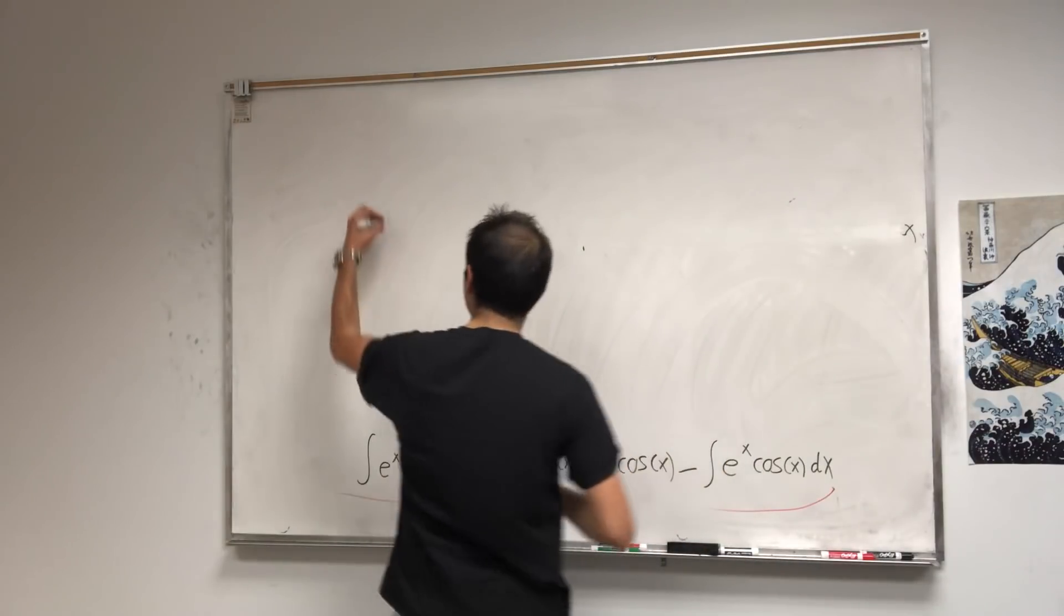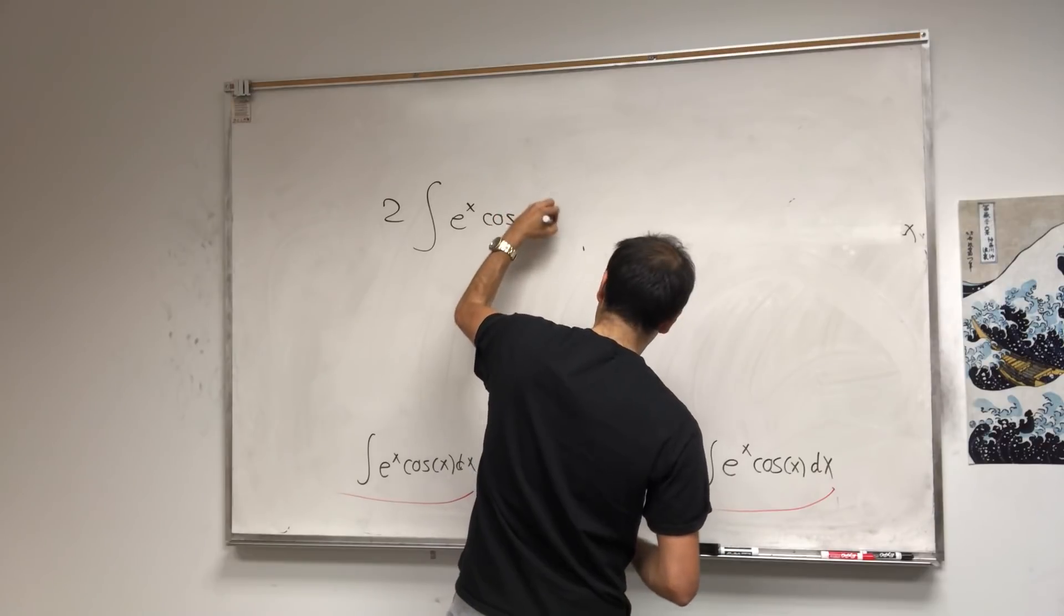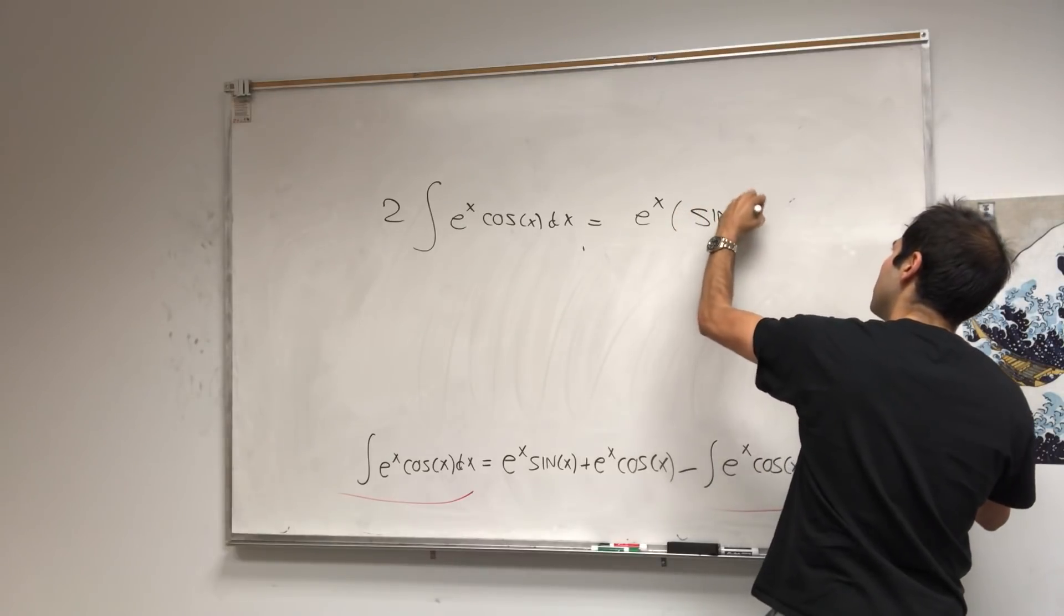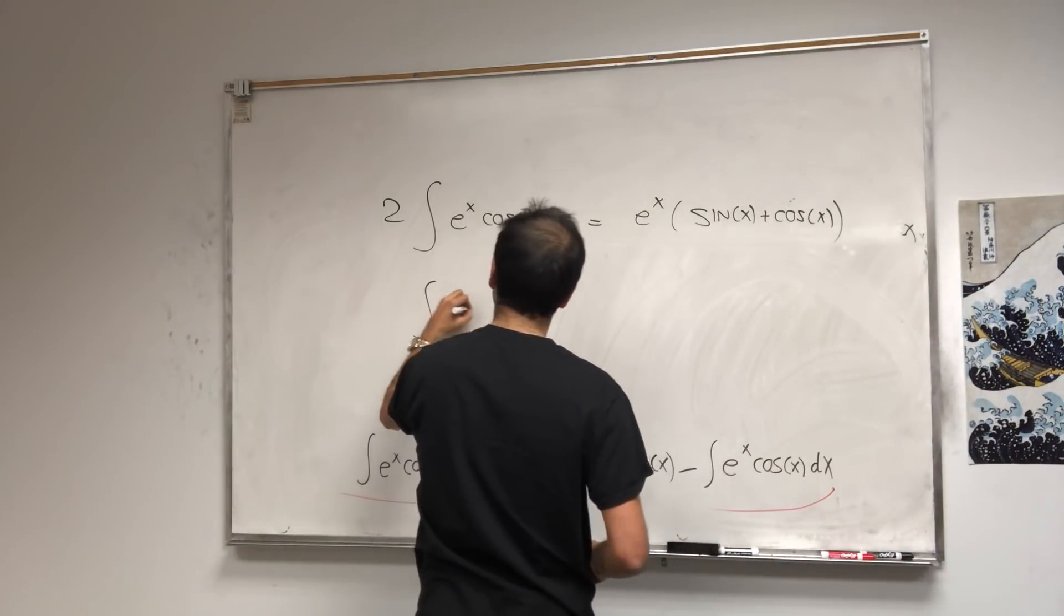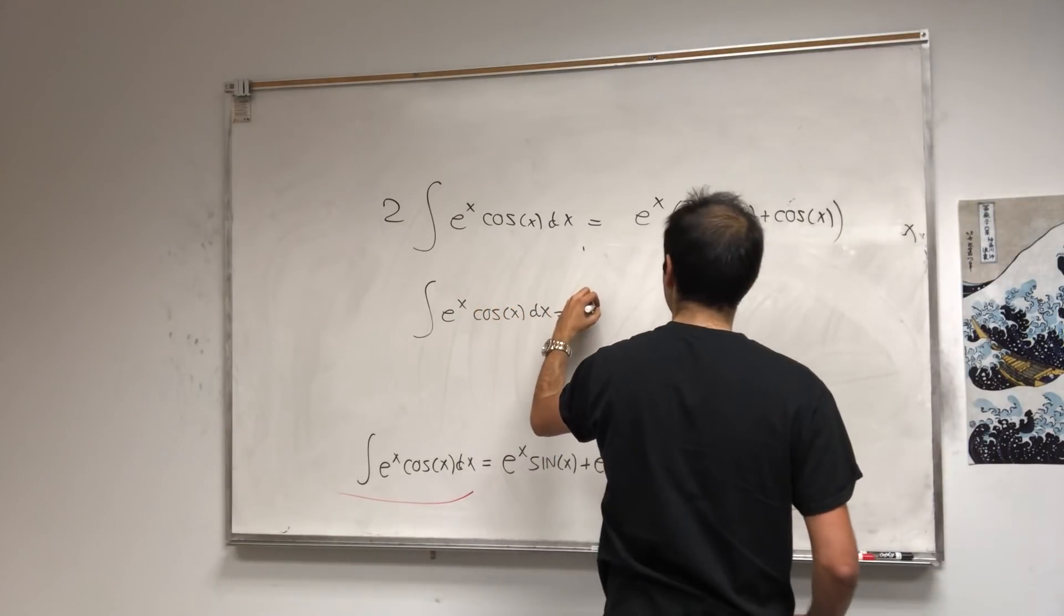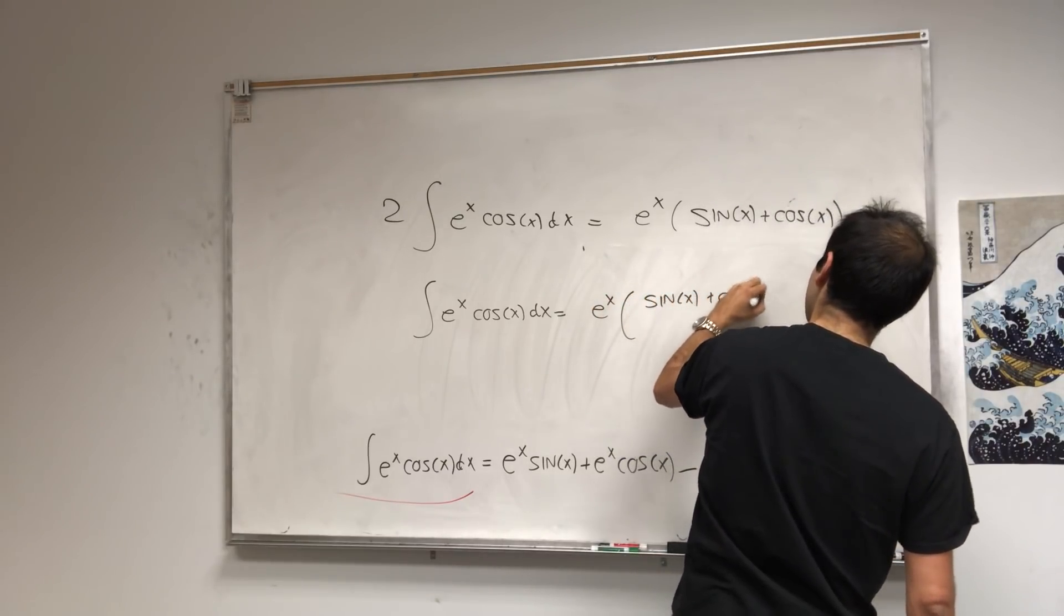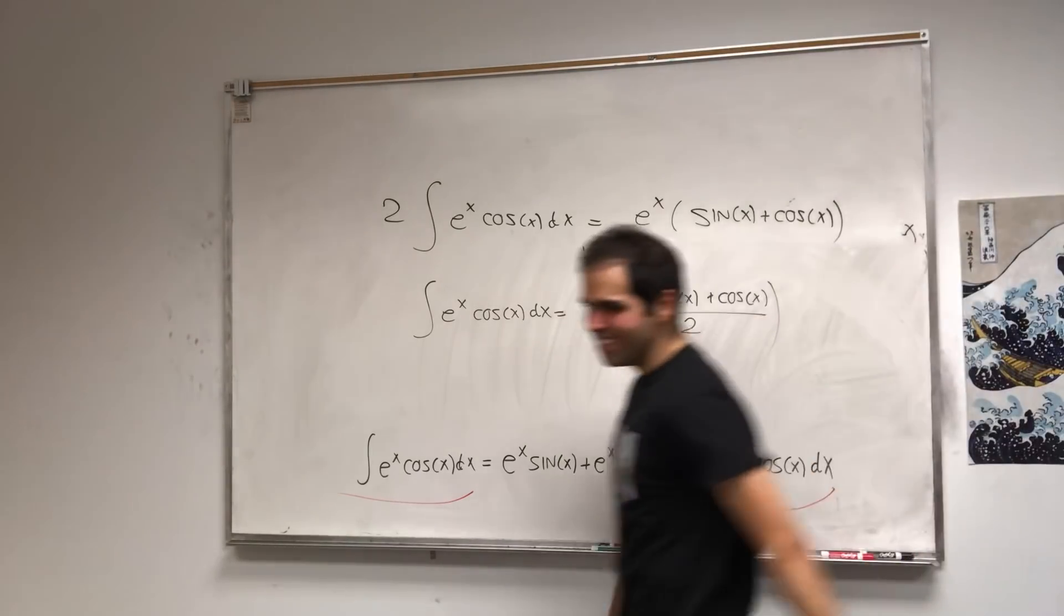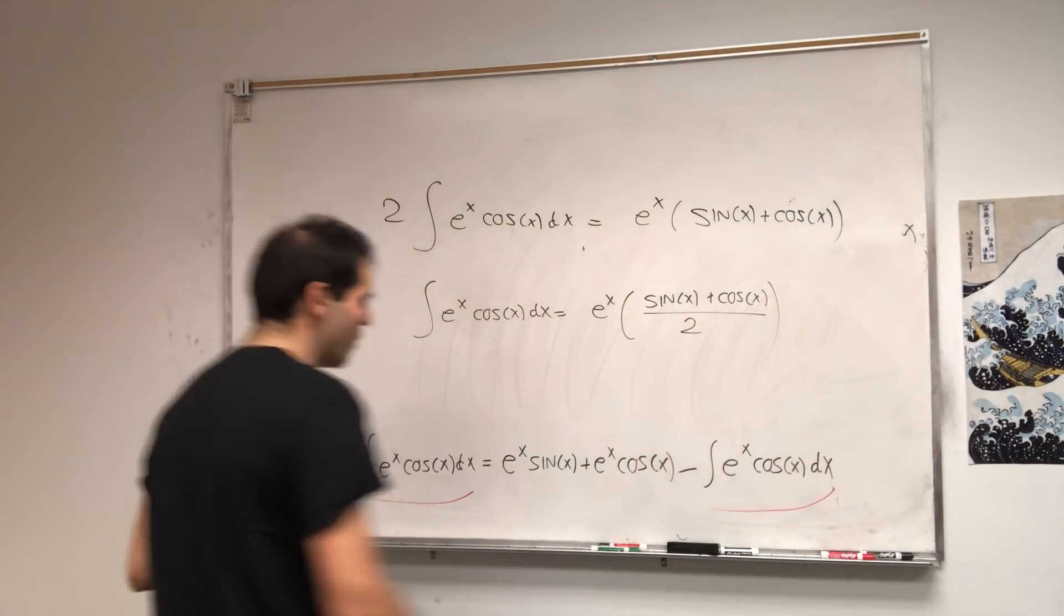So if you solve for it, you get the following: you get two integral e^x cos(x) dx equals e^x (sin(x) + cos(x)). And just dividing by two, you get integral of e^x cos(x) equals one half of that, so e^x (sin(x) + cos(x)) over two. Wow, how neat is that? So you might be impressed, but let me show you now the cool way, the oh my god way.